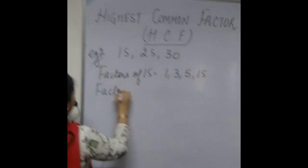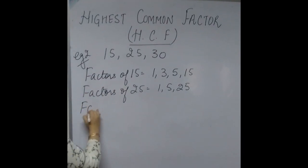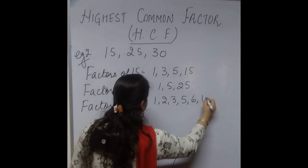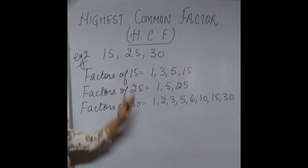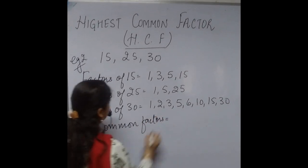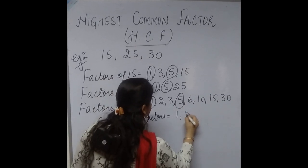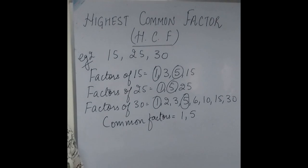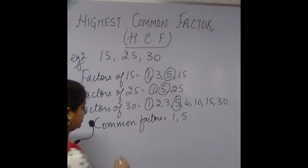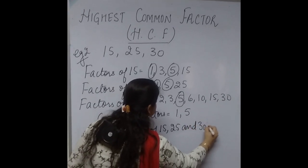The second number is 25. Factors of 25 are 1, 5, and 25. And factors of 30 are 1, 2, 3, 5, 6, 10, 15, and 30. These are the factors of the given numbers. Now let us find the common factors. The common factors are 1 and 5 — there is no other common factor among all the factors of the given three numbers. The last step: we have to take the highest of the common factors, and clearly the highest is 5. Therefore, HCF of 15, 25, and 30 is 5.